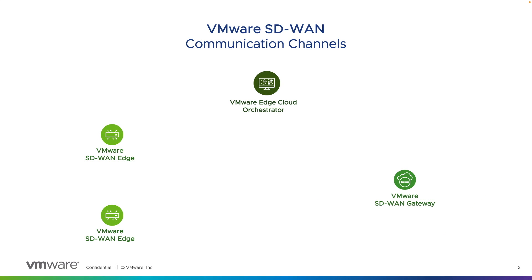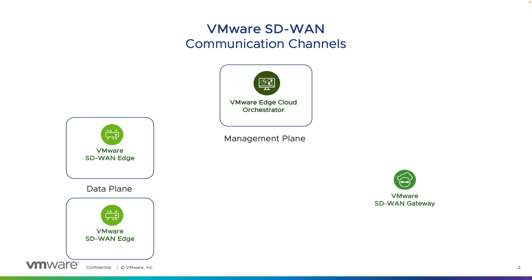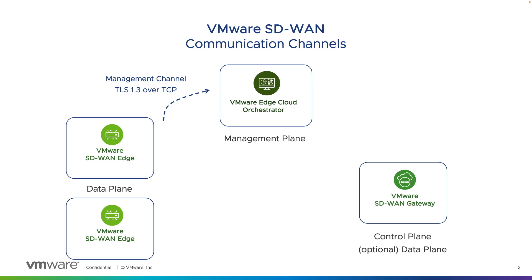We'll start with SD-WAN components targeted for on-premise sites and cloud locations. The VMware Edge Cloud Orchestrator forms the management plane. Edges form the data plane, and SD-WAN gateways form the control plane and optionally can participate in the data plane. Newly deployed or provisioned edges will attempt a TLS 1.3 session over TCP towards the orchestrator in the outbound direction from their deployment location for management plane communication, and in the VMware hosted model, this encrypted communication attempt will be across the public internet.